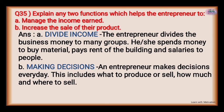Explain any two functions that help the entrepreneur manage the income earned and increase the scale of their product. First, divide the income: the entrepreneur divides business money into groups — spending on material, paying rent, and paying salaries. Second, making decisions: entrepreneurs make decisions every day including what to produce or sell, how much, and where to sell. Together these functions help manage income and increase sales.